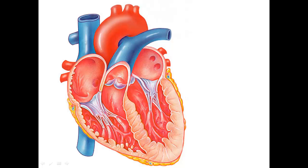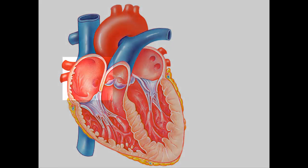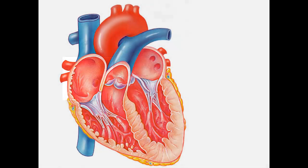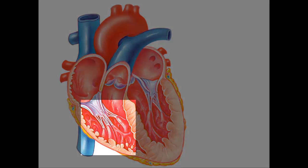Here is the aorta, which carries oxygenated blood throughout the body. Now let's say a few words about the chambers and valves. We'll start with the chambers. Blood returns from the body via the superior and inferior vena cava, which drain into the right atrium, the collecting chamber for the systemic circulation. The blood then goes into the right ventricle, the pump for the lungs.